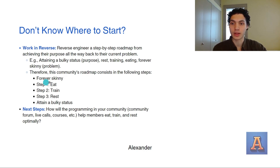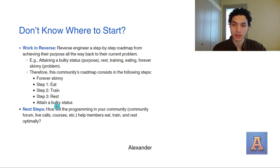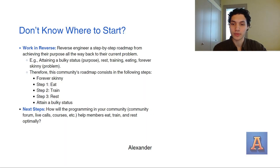They start off as being forever skinny, or at least they seem to think so. But if they follow all the steps — step one: eat; step two: train; step three: rest — they can eventually attain a bulky status, which is their main purpose. The next steps would then be: how would the programming in your community — your community's forum, live calls, courses, et cetera — help members eat, train, and rest optimally?